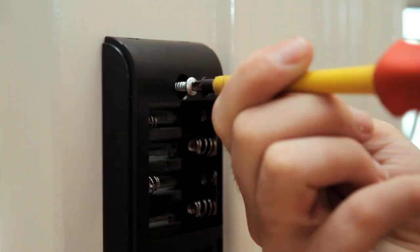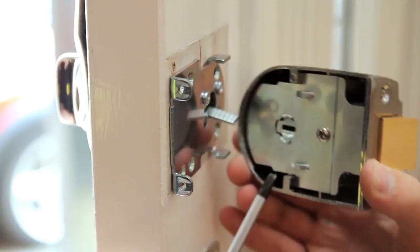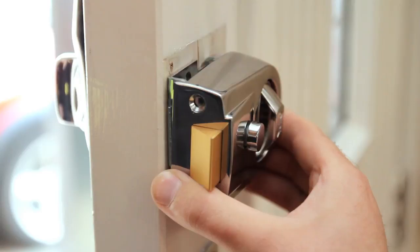Place the lock case over the mounting plate making sure that the flat connecting bar is inside the slot in the lock case and push towards the door. Secure the lock case to the mounting plate with the two small screws provided.